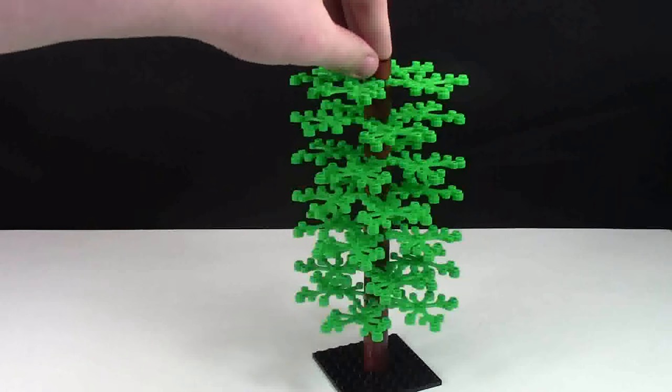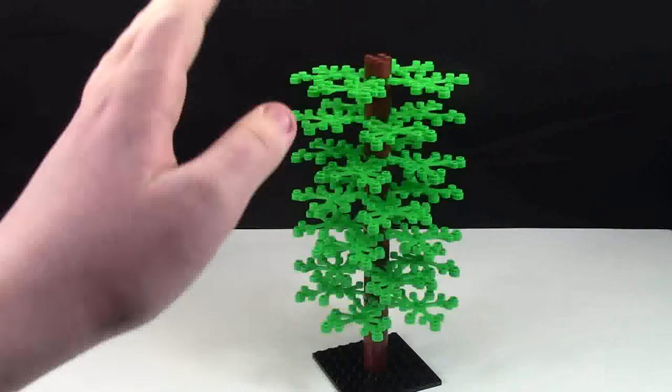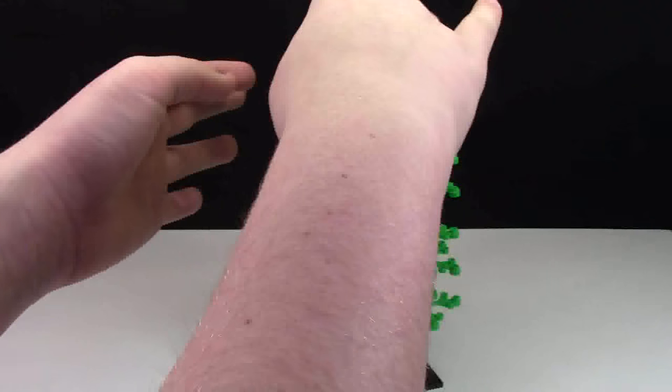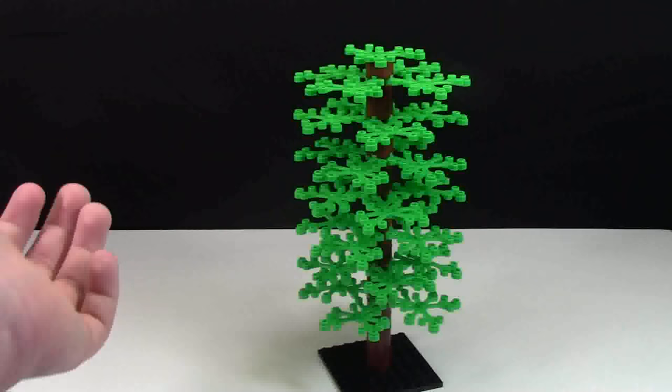And then you're going to take one final leaf part and you're going to center it. You're going to put it smack in the center of that round brick. And there you have it, your tree is done.